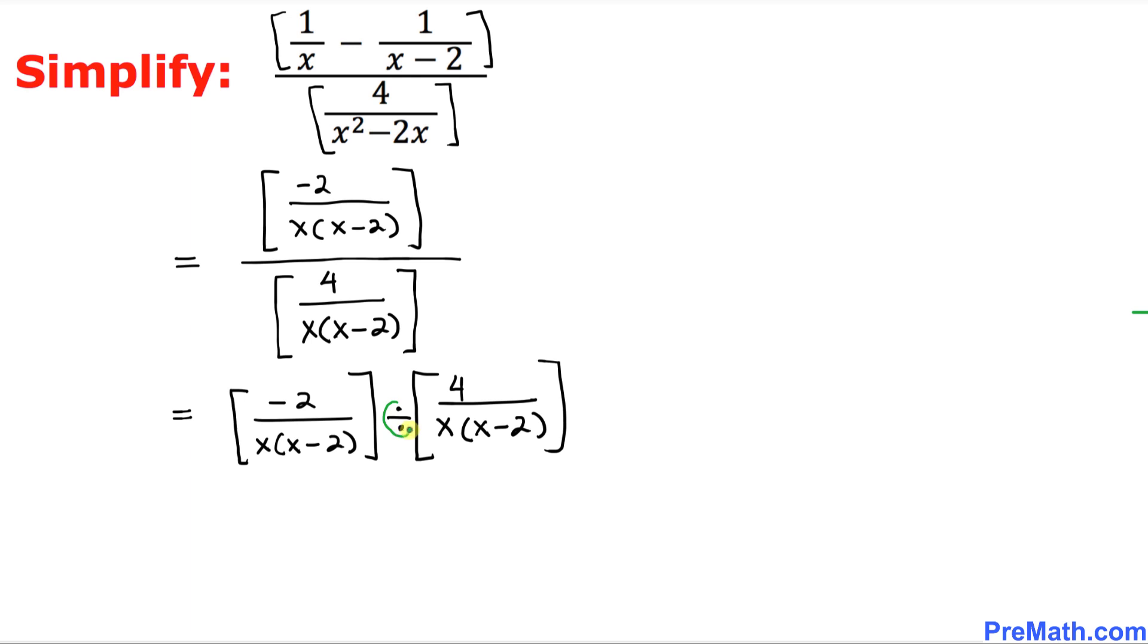And in this next step, we are going to convert this division symbol into multiplication by taking this step. Just watch and see how I'm going to do that one. So negative two divided by x times x minus two is for this first bracket, and then I'm going to convert this division sign into multiplication.